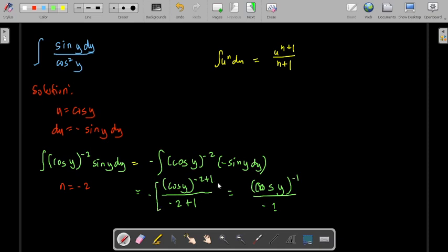from this one. So this will be negative 1. Okay, so we'll end up with, so this is negative 1 times negative 1, that will be positive. So we have cosine y raised to the power of negative 1